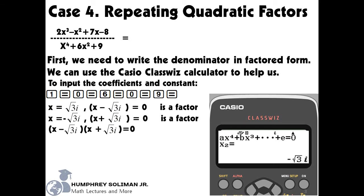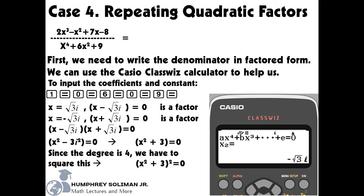Notice that we have imaginary numbers in the factors. So we have to simplify this into a quadratic factor. By multiplying the factors with imaginary numbers, we will have x squared plus 3. Since the degree of the denominator is 4, we can still square this quantity to get the same value as our denominator. We now have the rational expression with its denominator in factored form.